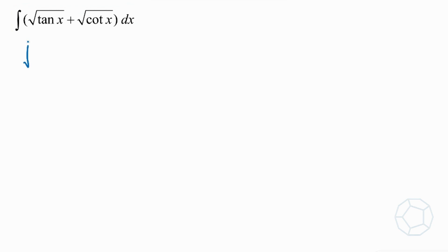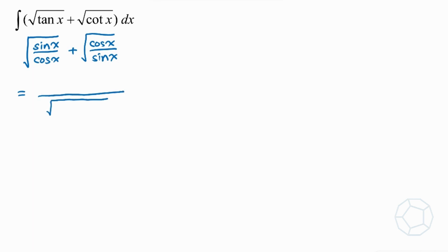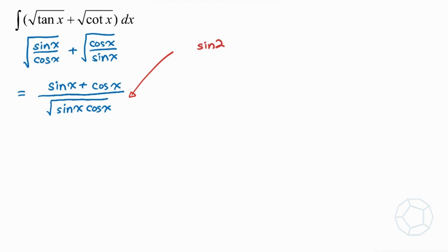First of all, we're going to change the two terms tangent x and cotangent x into two fractions. So we have square root of sine x over cosine x, plus square root of cosine x over sine x. Combining the two fractions together, we'll have a common denominator: square root of sine x times cosine x, and the numerator is sine x plus cosine x.